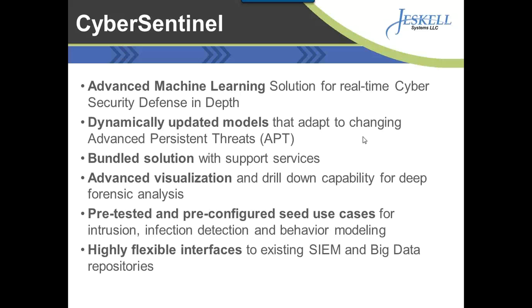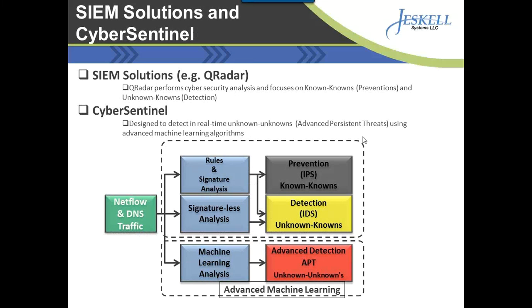CyberSentinel is very flexible and will interface with existing SIEM and big data analytic solutions. This chart shows where CyberSentinel fits within the marketplace versus existing SIEM solutions like QRadar and HP ArcSight. Existing SIEM solutions generally have two approaches: they detect known knowns via rules and signature analysis — that's your intrusion prevention system — and also signature-less approaches which detect unknown knowns. In both cases, these are generally attacks that are understood, and you're preventing or detecting those within your network.